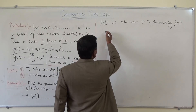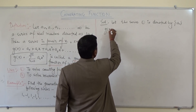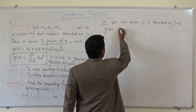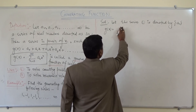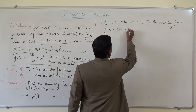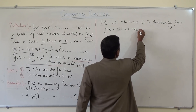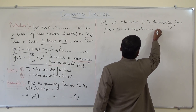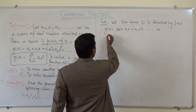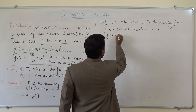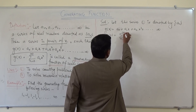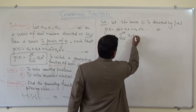We know that G(x) equals a₀ plus a₁x plus a₂x² and so on up to infinity, or equivalently G(x) equals the sum from n equals 0 to infinity of aₙxⁿ.